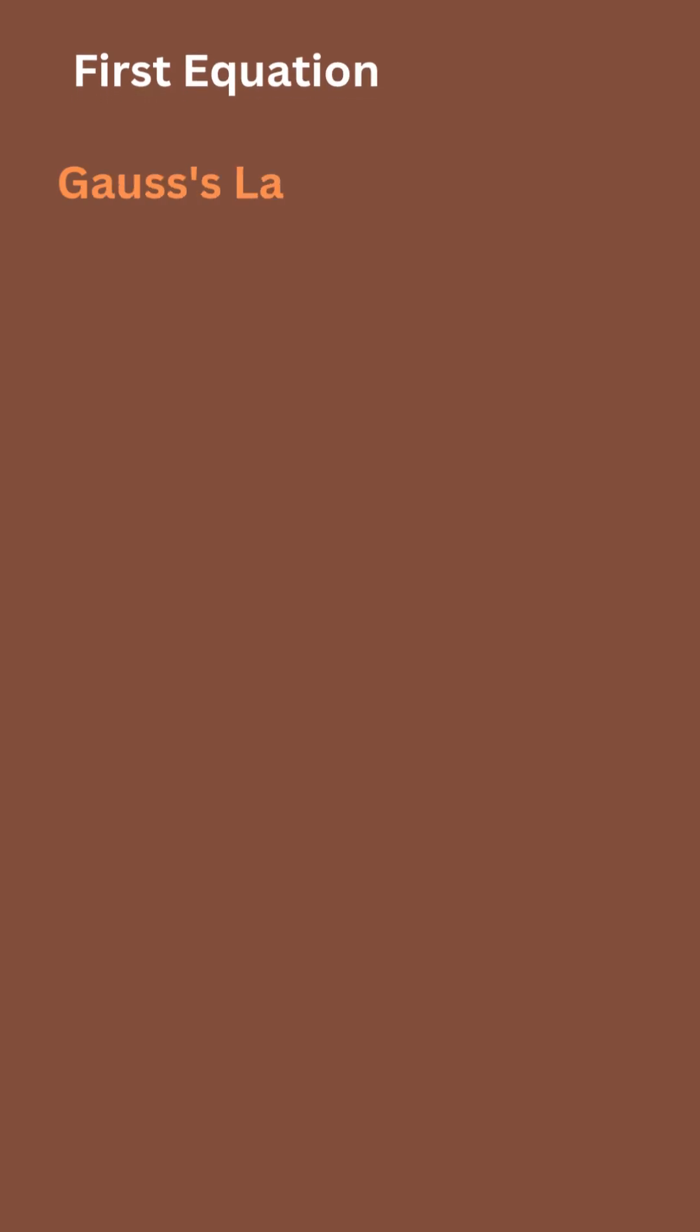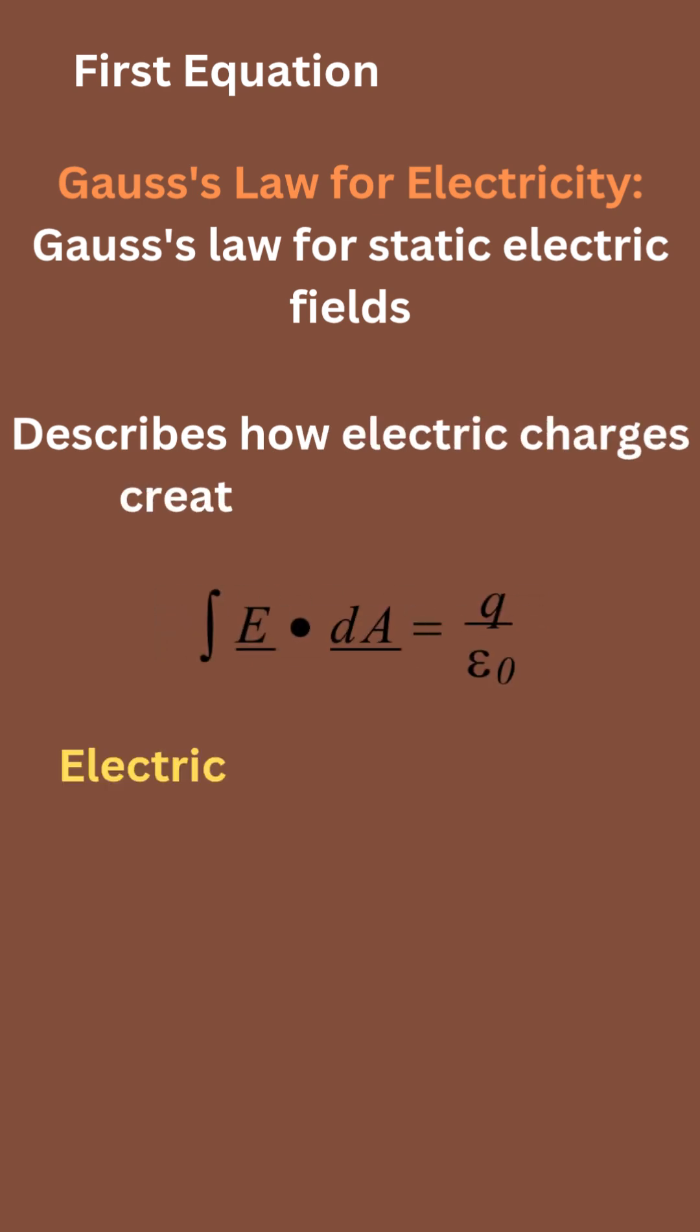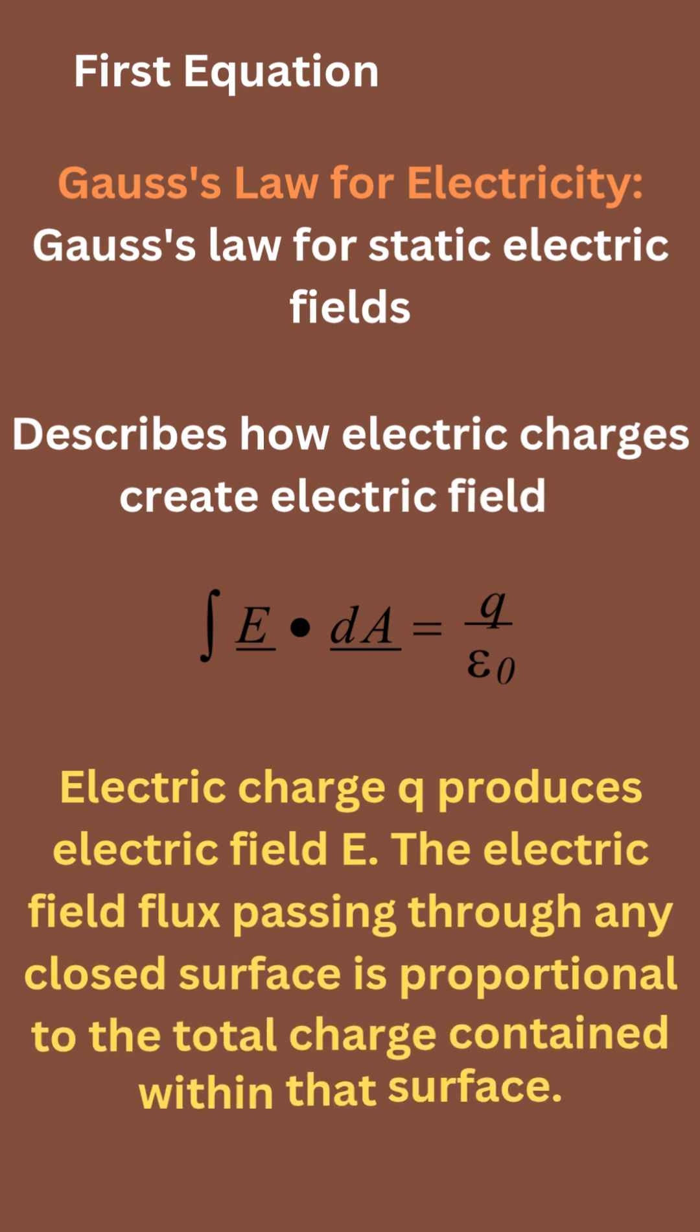Now let's see the first equation, it is Gauss's law for electricity. This law is for static electric fields. It describes how electric charges create electric fields. Here is its integral form, which says electric charge Q produces electric field E. The electric field flux passing through any closed surface is proportional to the total charge contained within that surface.